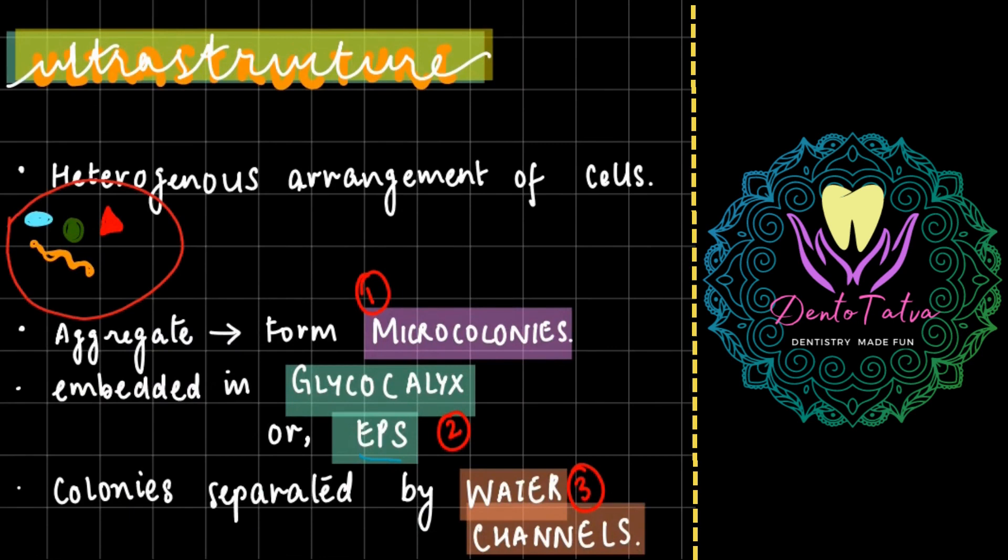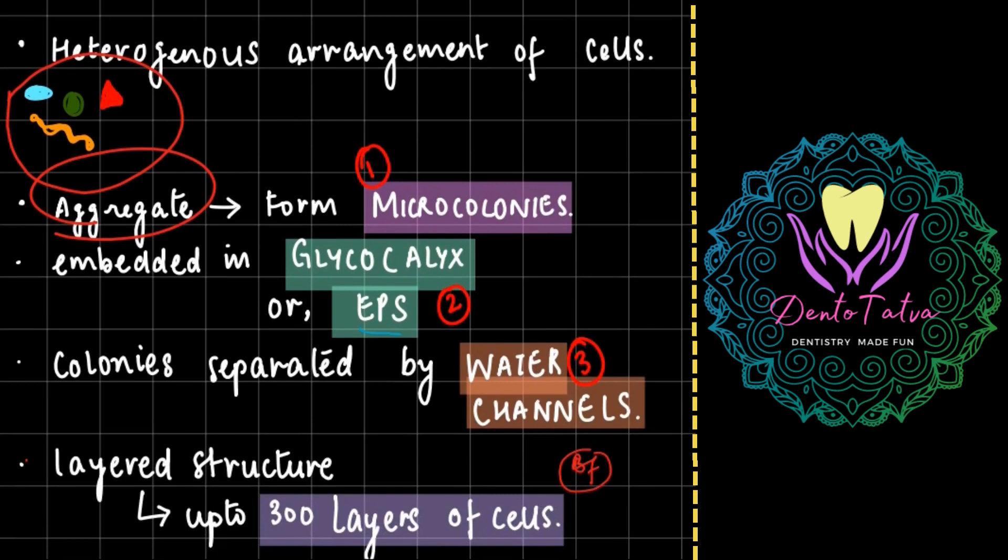There are various types of cells and they form an aggregate of microcolonies. So what is going to happen is first all of these cells will form a very tiny and small community. Over time this community is going to grow in number, protected and embedded in a glycocalyx, and these colonies are separated by various water channels.